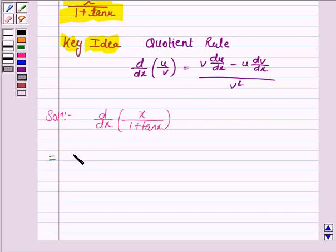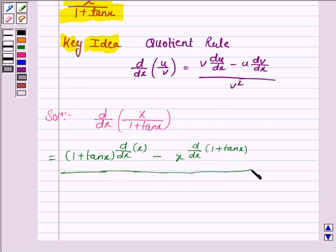v that is 1 plus tan x into the derivative of x minus u that is x into d by dx of v that is 1 plus tan x upon v square that is 1 plus tan x whole square.